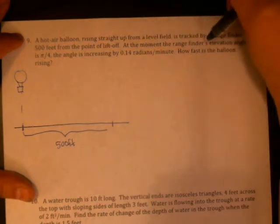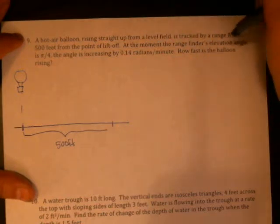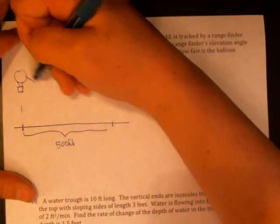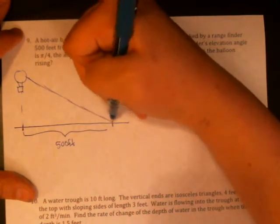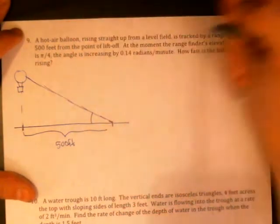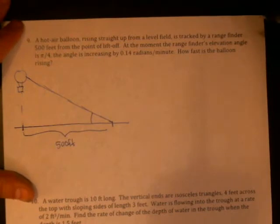At the moment, the rangefinder's elevation angle is π over 4, so elevation is always up from horizontal. It's increasing by 0.14 radians per minute. We're supposed to figure out how fast the balloon is rising.